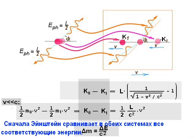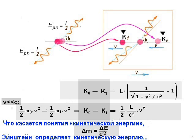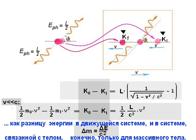At the beginning of the article, Einstein compares all corresponding energies in both systems. As to the concept of kinetic energy, Einstein defines kinetic energy as the difference in energy in these two systems. Of course, only for the massive body.